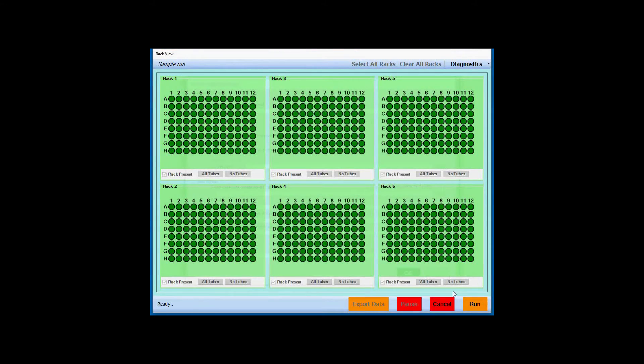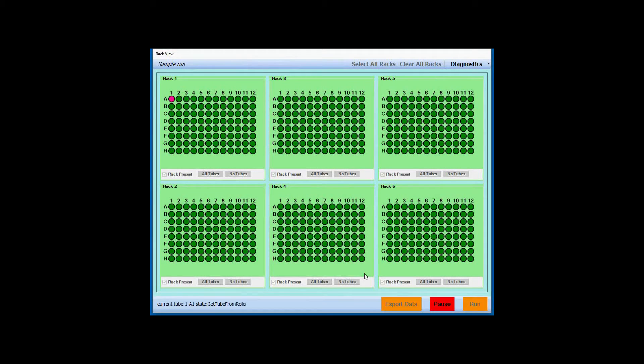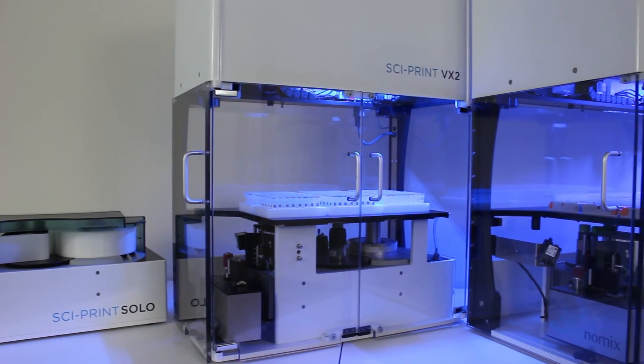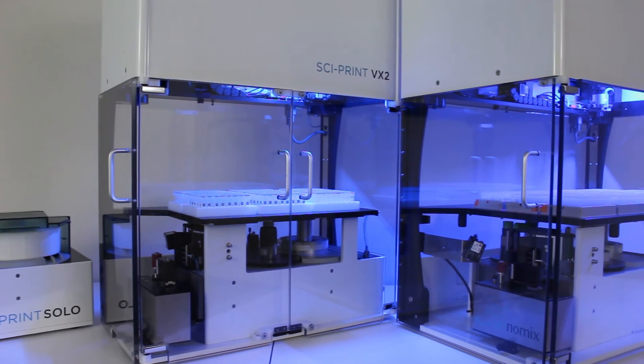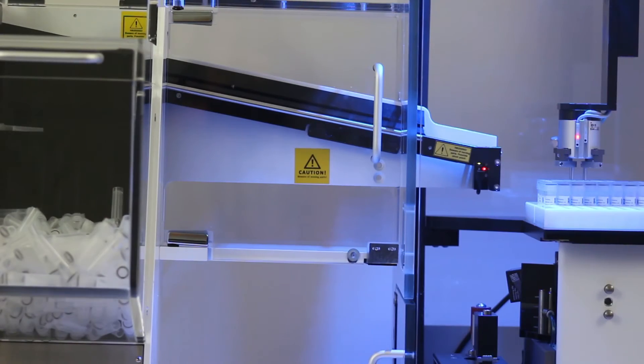Labeling throughput of the SciPrint VX series is approximately 425 tubes per hour. In a recent customer survey, 53% of end users stated their vial labelers saved them between 5 and 20 hours per week on average, while nearly 10% claimed more than 20 hours per week on average in time savings.